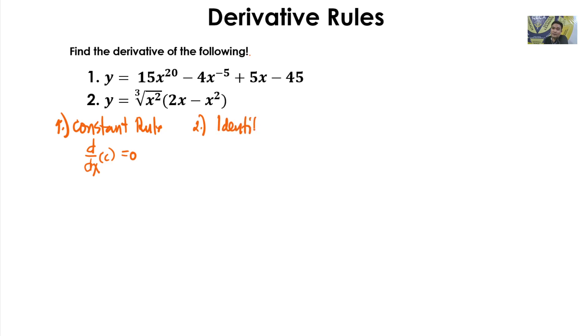Next is the Identity Rule. It states that the derivative of x with respect to x is always equal to one.